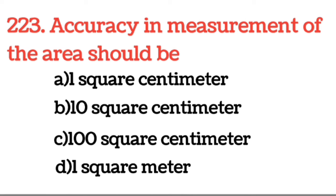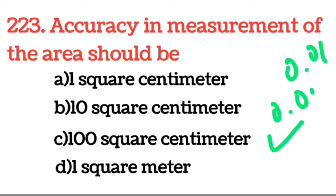Next question: Accuracy in measurement of area should be? Answer: 100 square centimeter. Area के measurement में accuracy 100 square centimeter होनी चाहिए।